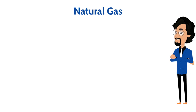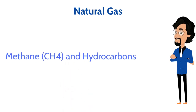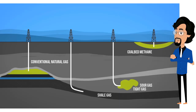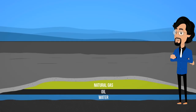Natural gas is primarily methane with smaller quantities of other hydrocarbons. Conventional natural gas can be extracted through drilling wells. Unconventional forms of natural gas — like shale gas, tight gas, sour gas, coal methane, and gas hydrates — have specific extraction techniques. Natural gas can also be found in reservoirs with oil and is extracted alongside it; this is called associated gas. In the past this gas was commonly flared, but today it is mostly captured and used.